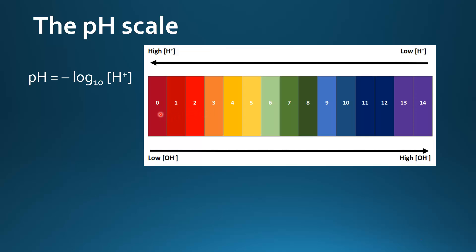We can use universal indicator or a pH meter to find the pH of a solution. Acidic solutions have a pH number from 0 to 6. Neutral solutions have a pH number of 7. And basic solutions have a pH number from 8 to 14.